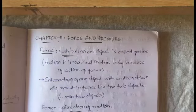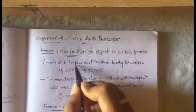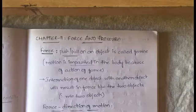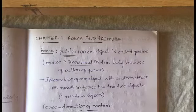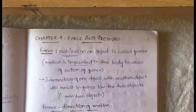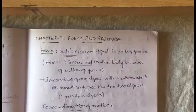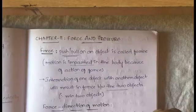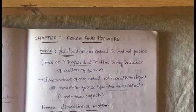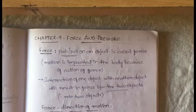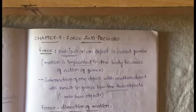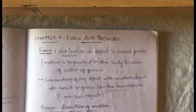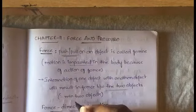Motion is imparted on a body because of the action of force — the body will come into motion because of force. Interaction of one object with another object will result in force between the two objects. Interaction means contact or communication — when two bodies are interacting with each other, a force is developed between them.